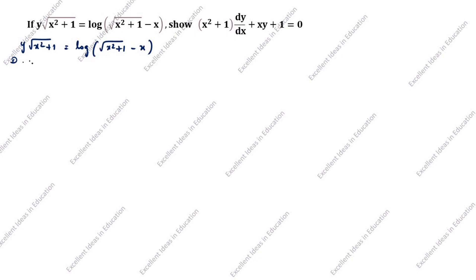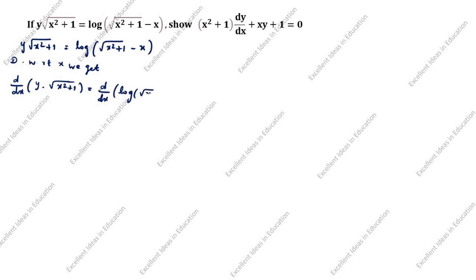Differentiating with respect to x, we get d/dx of [y · √(x²+1)] = d/dx of log(√(x²+1) − x). The left side is of the form u·v, so this is the product rule. The u·v formula is: u·v' + v·u'.